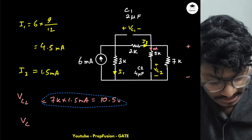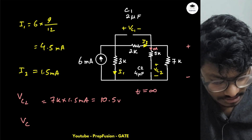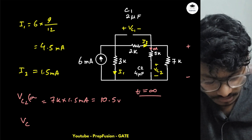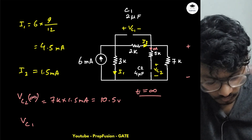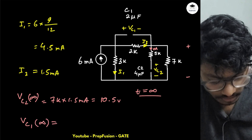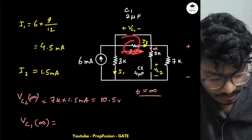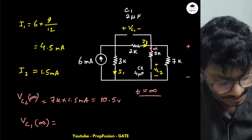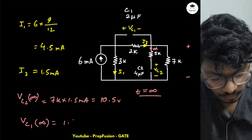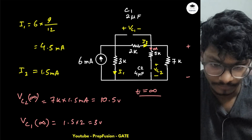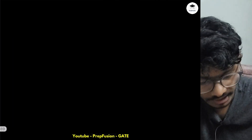This is the steady state value — we are not talking about transient state. For VC1, it is simply I2 multiplied by the 2 kΩ resistor: 1.5 mA × 2 kΩ = 3 V. So VC1 = 3 V.